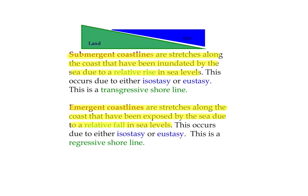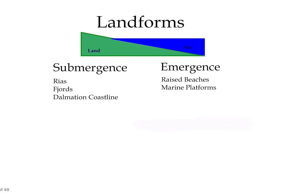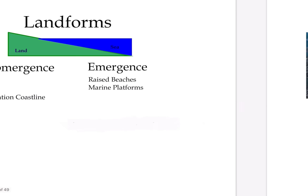Submerging coastlines are stretches along the coast that have been inundated by the sea due to a rise in sea level. An emergent coastline is a coast that's been exposed because of a fall in sea level. With submergence and emergence come various different landforms. The main ones with submergence are rias and fjords; with emergence, raised beaches and marine platforms.